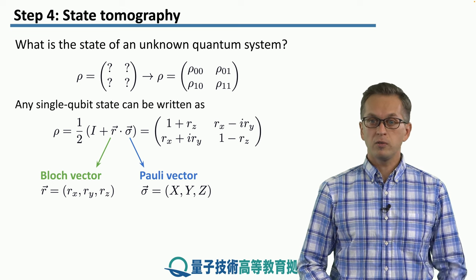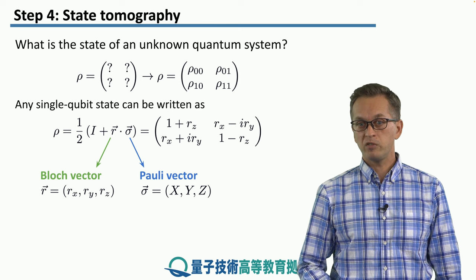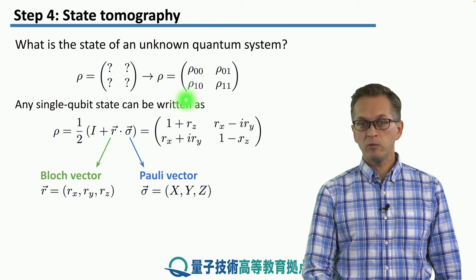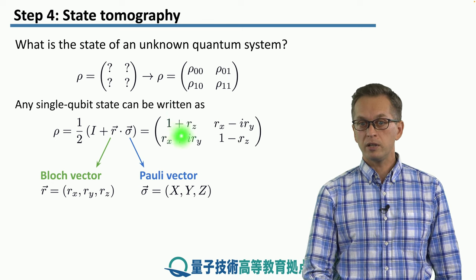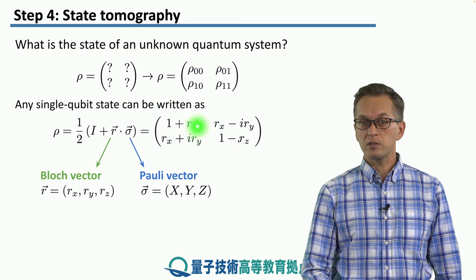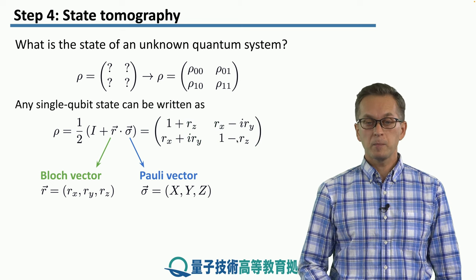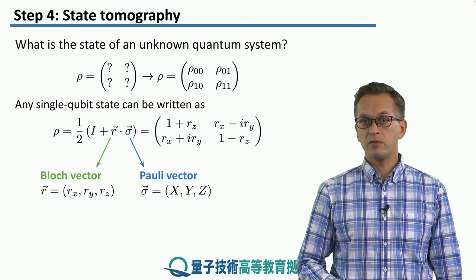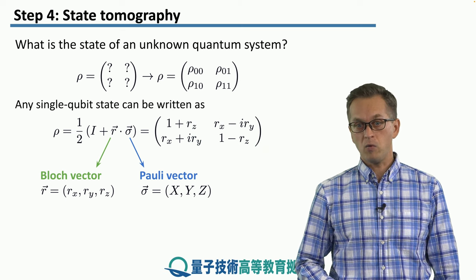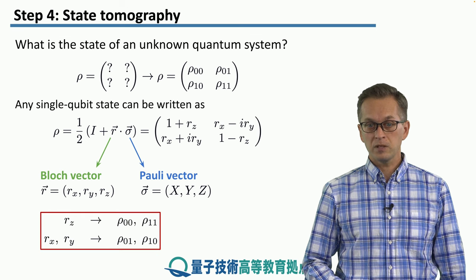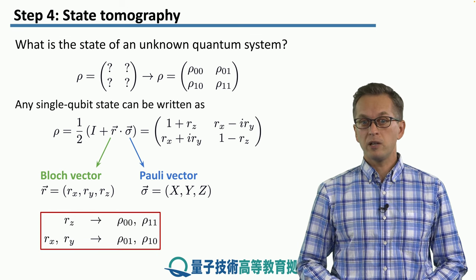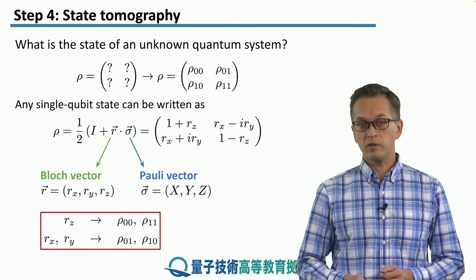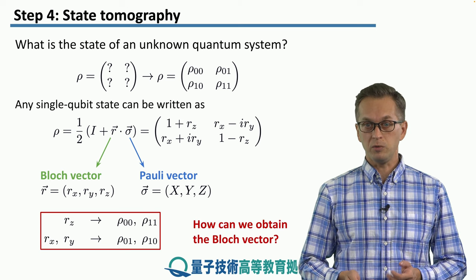For example, if we know what the rᵤ is, the z component of the Bloch vector, immediately we know what are the diagonal elements of the density matrix. And if we want to find out what are the off-diagonal elements, we need the values of rₓ and rᵧ. So the question now is, in order to find out the state, we have to find out what are the Bloch vector components. So how do we do that?